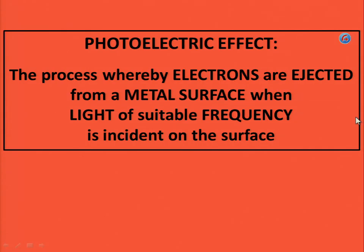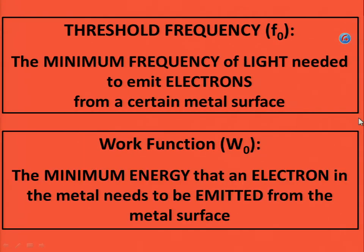Photoelectric effect: the process whereby electrons are ejected from a metal surface when light of suitable frequency is incident on the surface. Threshold frequency: the minimum frequency of light needed to emit electrons from a certain metal surface. Work function: the minimum energy that an electron in the metal needs to be emitted from the metal surface.